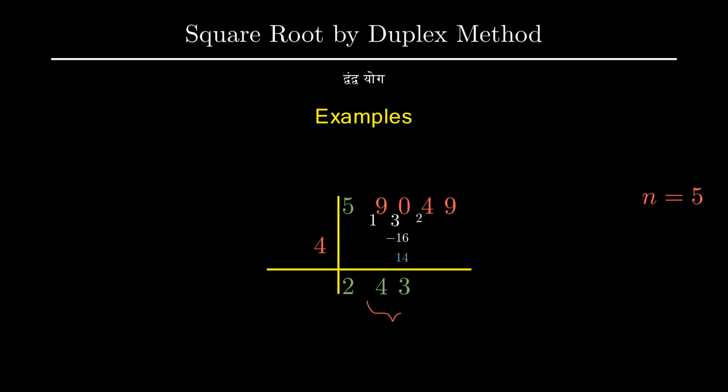After this we will find duplex of the previous two digits that is 43. Duplex of 43 will be given by 2 times 4 times 3 which gives us 24. 24 is then subtracted from the starting number which is also 24.